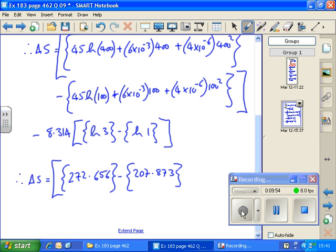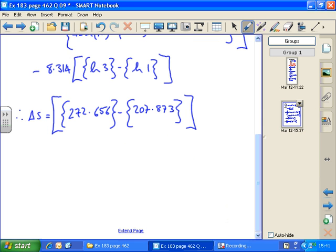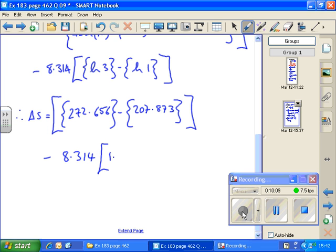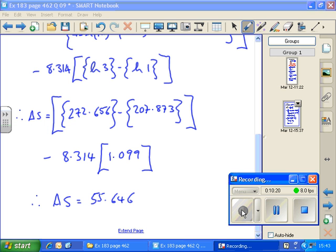That's the first integral, minus 8.314, and then we'll work out what log 3 minus log 1 is, 1.099. Then we'll calculate the final answer, and we should get the answer in the textbook. 55.646, rounded to 55.65.